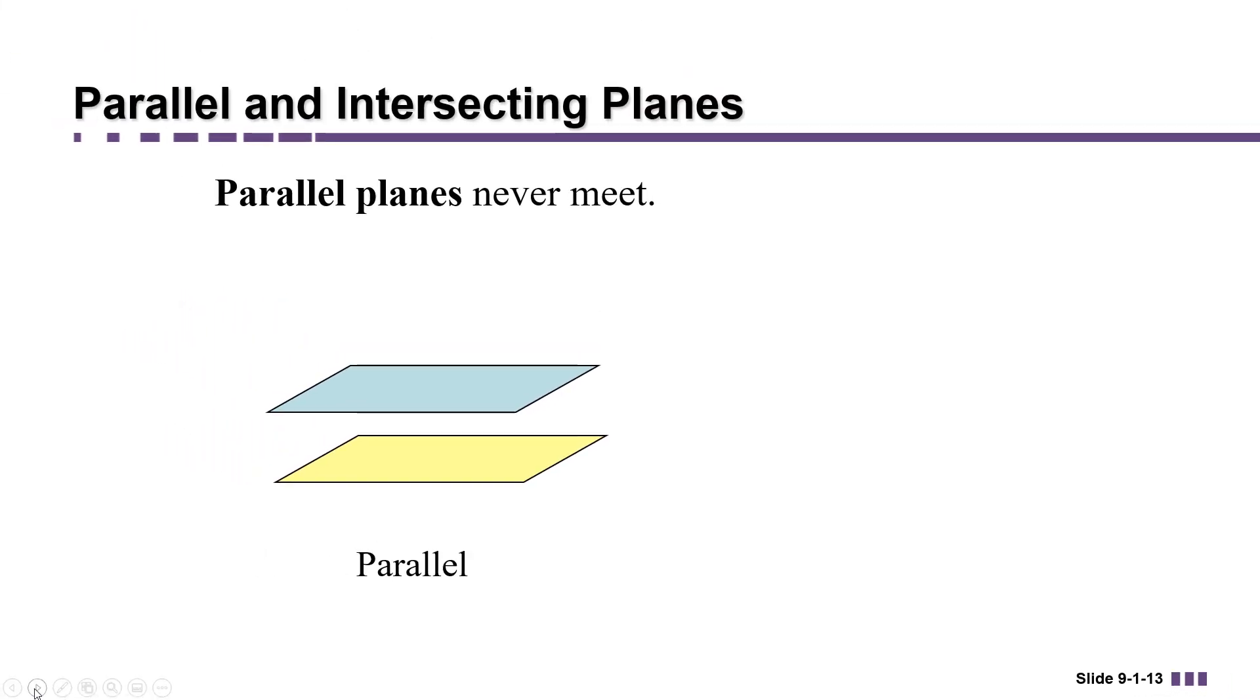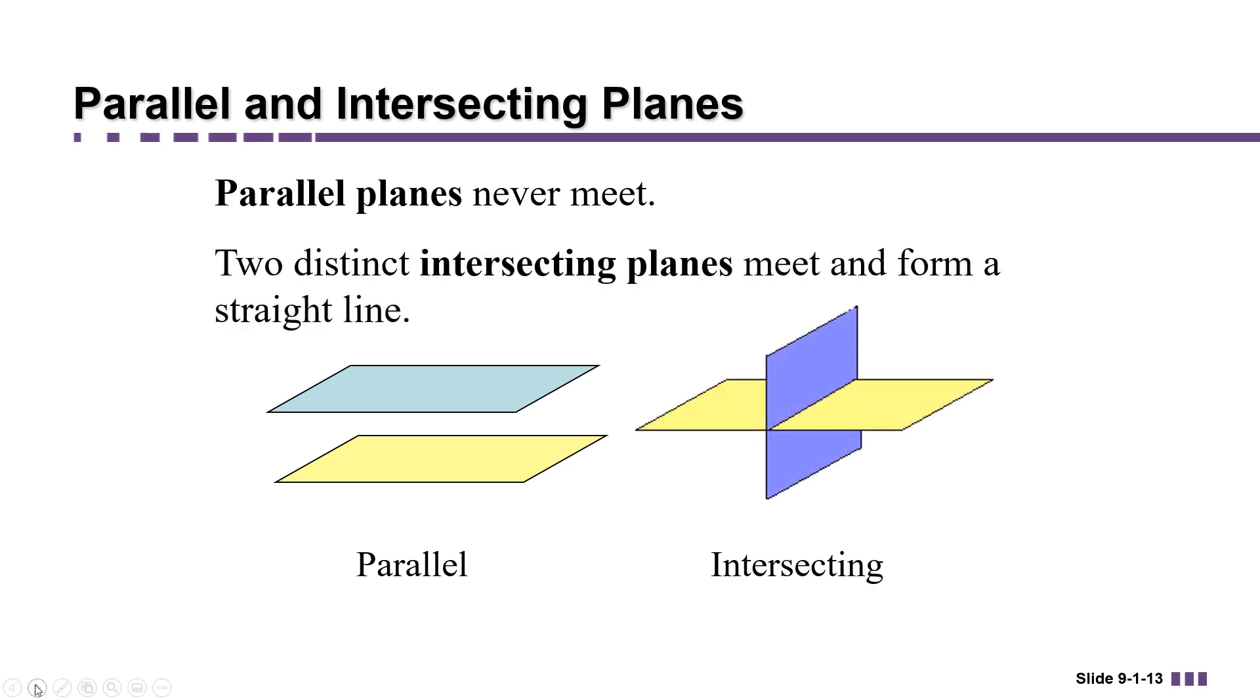When we're discussing planes, it's possible for planes to be parallel, which means that they never meet, or for them to intersect. When two planes intersect, they intersect at a line.